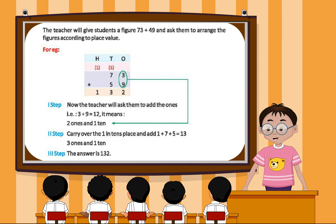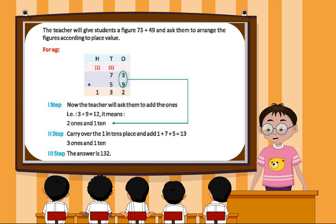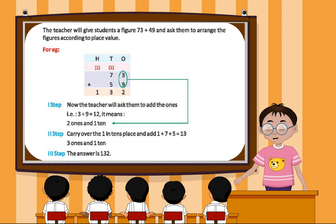Second step: carry over the 1 in the tens place and add 1 plus 7 plus 5, which is equal to 13 — that is 3 ones and 1 ten. Third step: the answer is 132.